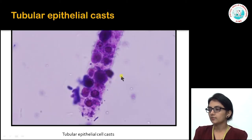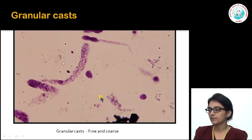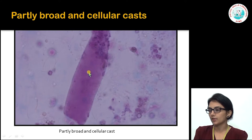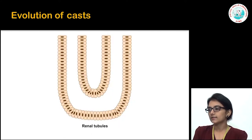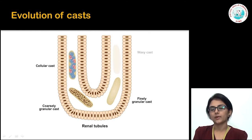Whenever there is tubular interstitial involvement, you can have tubular epithelial cell shedding picked up as tubular epithelial cell casts in the urine. These casts degenerate to form fine as well as coarsely granular casts. In later stages, particularly in patients with chronic renal failure, you can get broad or waxy casts. This slide shows how these casts evolve from cellular casts — whether WBC, tubular epithelial cell, or RBC — through coarse, fine, and then waxy casts.